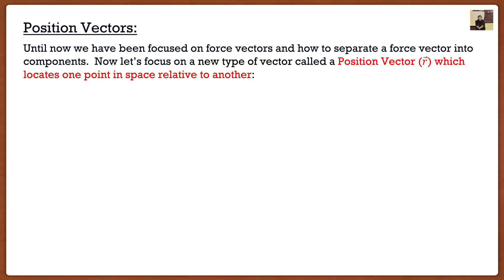In the last lecture we talked about 3D vectors and how they're basically the same as two-dimensional vectors — all the formulas are the same. The only thing we had to do was account for that third component, the K component. When talking about components of 3D vectors, there are three cases: trigonometry, coordinate direction angles, and now a third way which has to do with position vectors, which is more realistic since in real life you won't be measuring angles with a protractor.